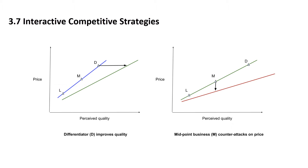The differentiator has a higher price but much better quality — this might be Mercedes. In between, there are a range of perfectly acceptable combinations, with the midpoint firm M. This might be Ford.